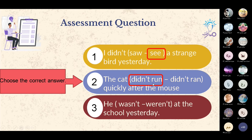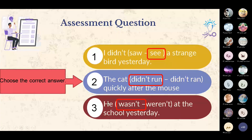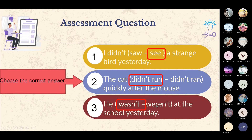الجملة الأخيرة: He wasn't or weren't at the school yesterday? الإجابة: wasn't — لم يكن في المدرسة البارحة. طبعاً wasn't تأتي مع ضمائر I وhe وshe وit، أما weren't فتأتي مع you وwe وthey. هذا الموضوع سيُشرح في الدرس القادم عن الماضي المستمر.